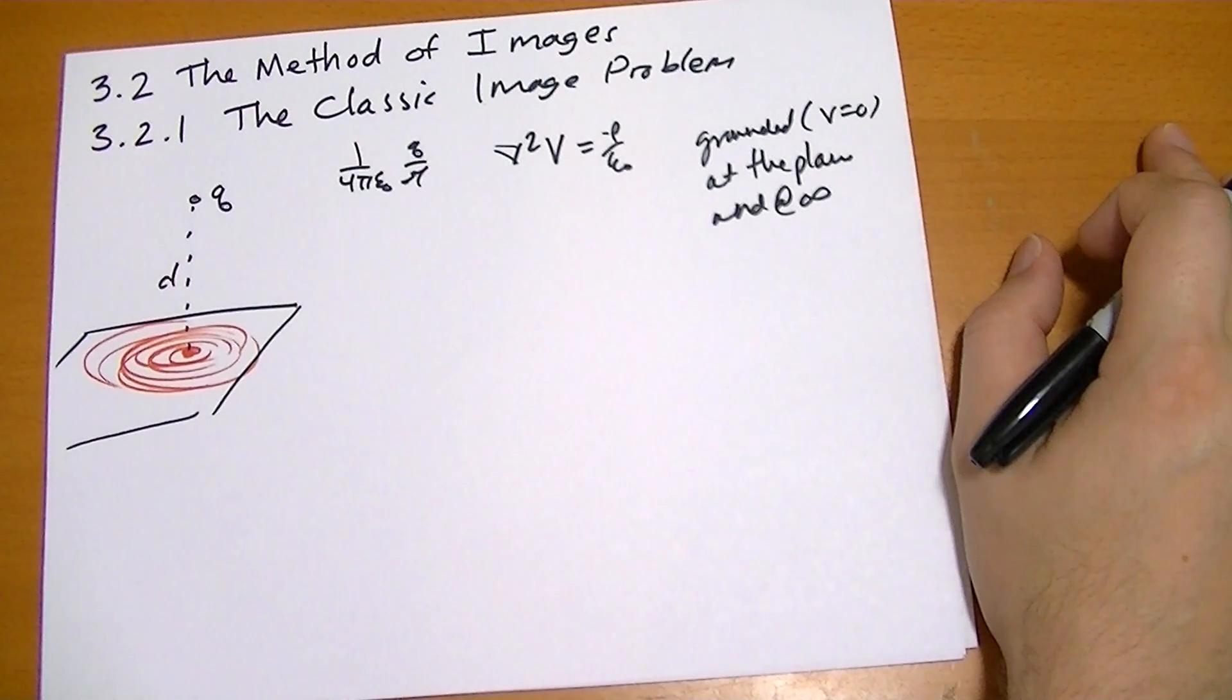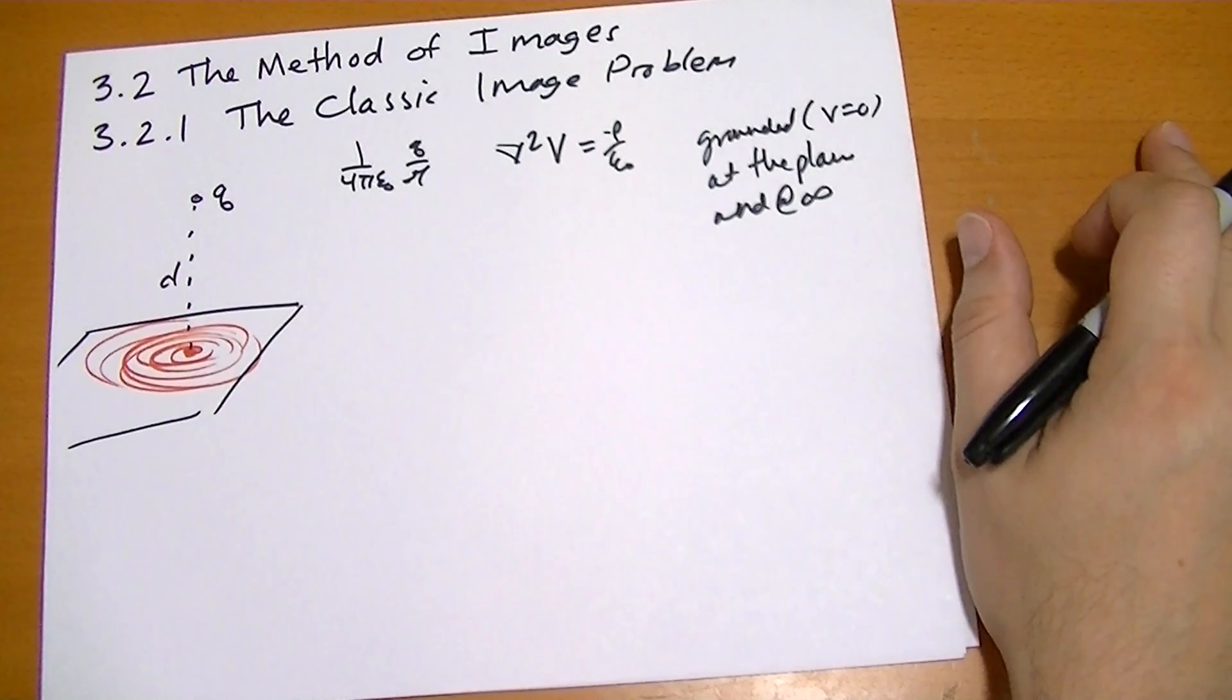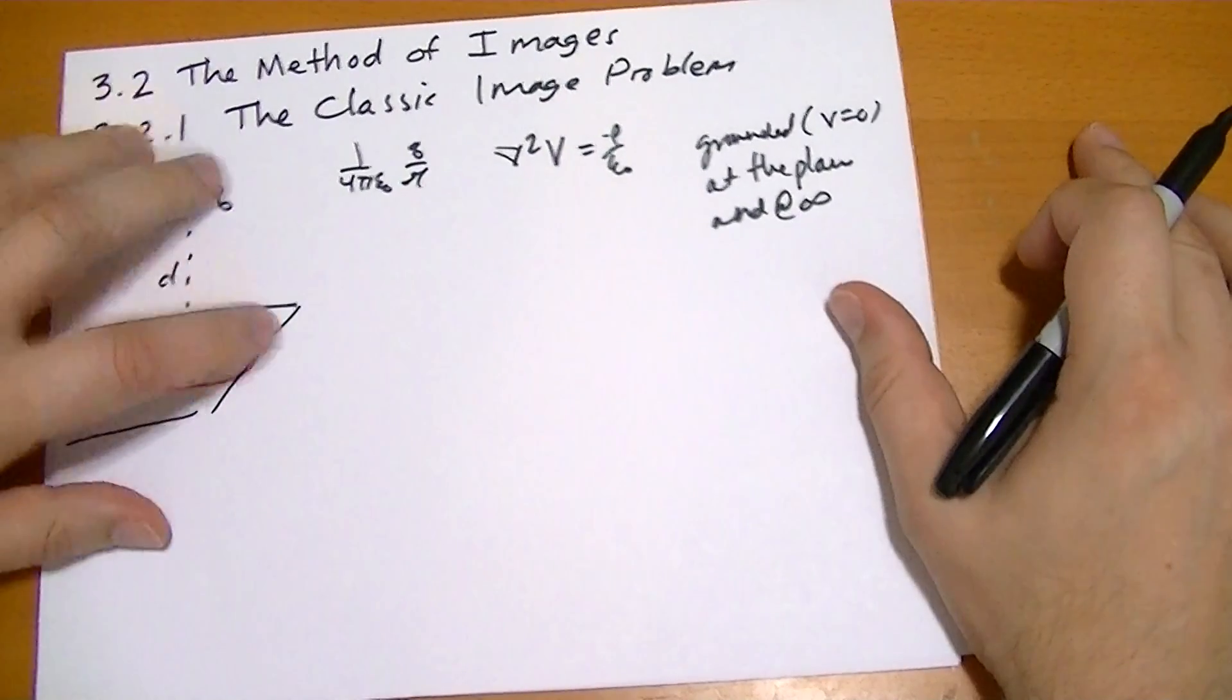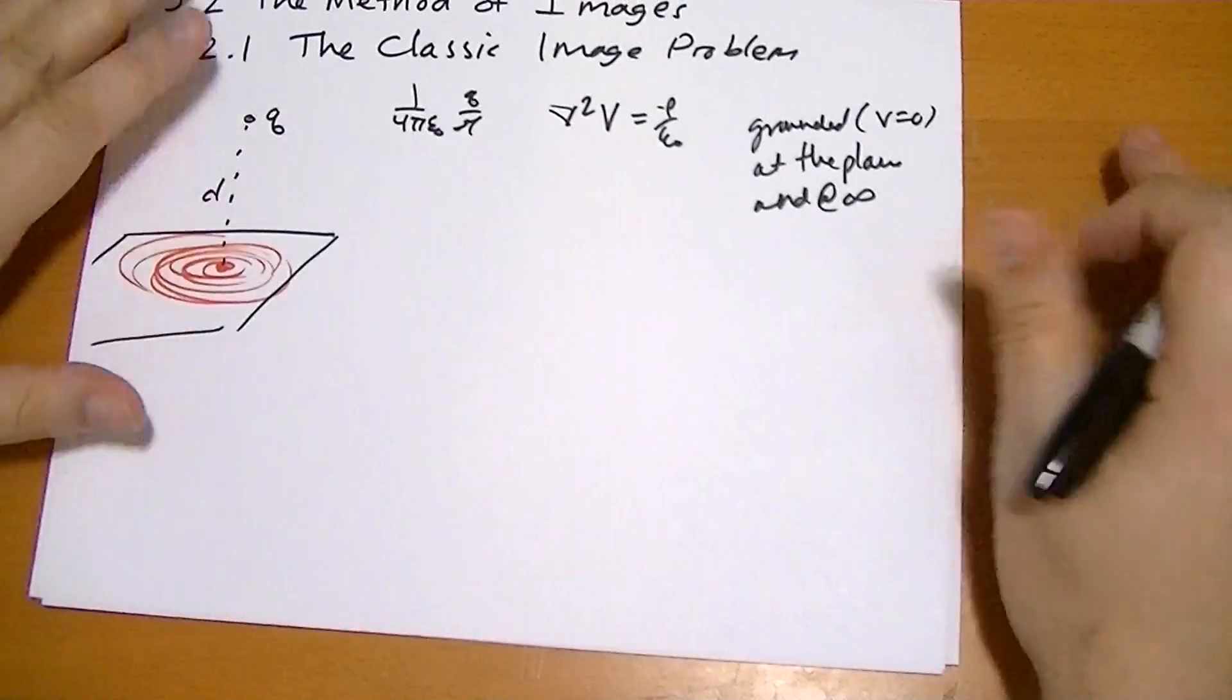So, we can use the uniqueness theorem, number one, to guarantee us one solution if we can find any solution. Right? And if you tried to, like, brute force this one, you would get nowhere quickly. So, we're not going to solve this problem. This is too hard. So, we're going to solve a different problem.